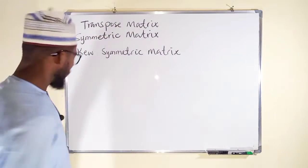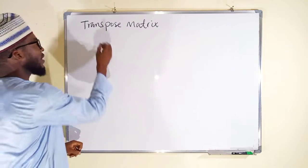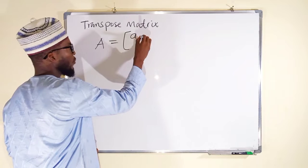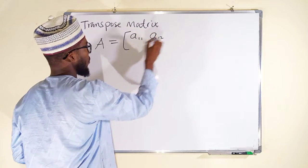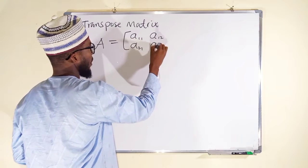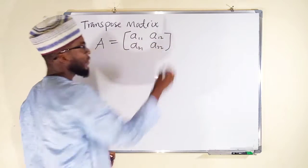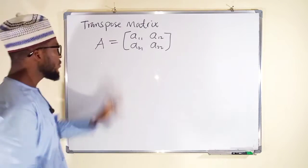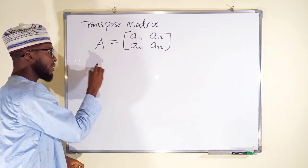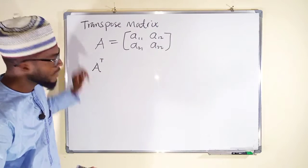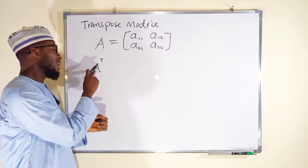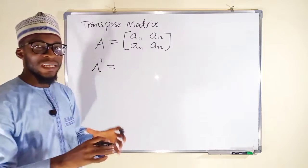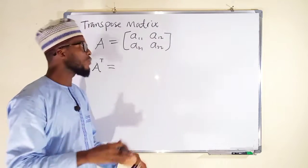Let's start with the Transpose matrix. We have a matrix A with entries A11, A12, A21, and A22. The transpose of matrix A, denoted by A raised to the power capital T, means the transpose of matrix A can be obtained by interchanging the rows and the columns of this matrix.